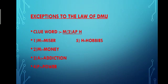The clue word is 'Map of Hindustan' — that is MAPH. M stands for two things: M is Miser, M is Money. A is Addiction, P is Power, and H is Hobbies. Let's now cover what each of these points means.